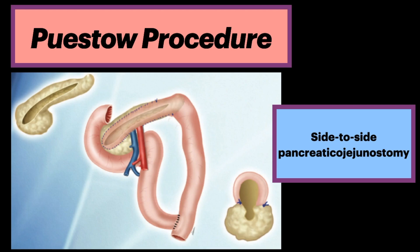The Puestow procedure is a side-to-side pancreaticojejunostomy with the pancreatic duct opened along its anterior surface, with subsequent longitudinal pancreaticojejunal anastomosis of the duct with a Roux loop.